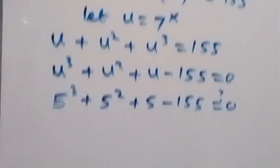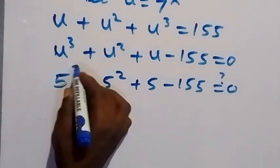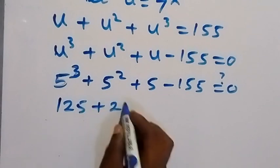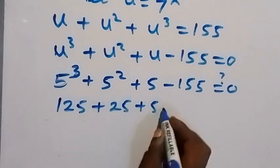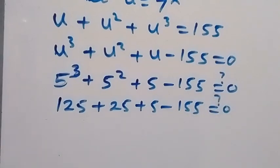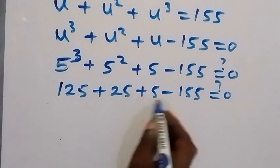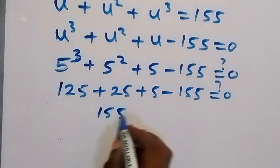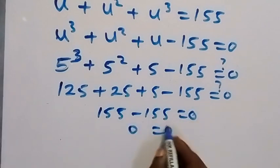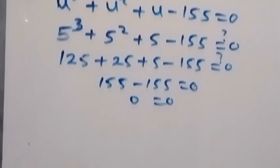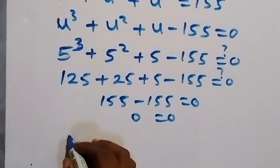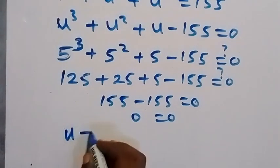When we check, we have 5 cubed — that's 5 times 5 times 5, that's 125 — plus 5 squared, that's 25, plus 5, minus 155, equals 0. This is 150 plus 5: 155 minus 155 is equal to 0. So 5 is one of the roots, that is u is equal to 5.